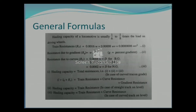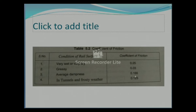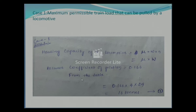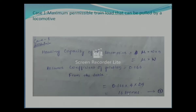The coefficient of friction is assumed to be 1/6 to 1/8 of the load on the driving wheel. From the table, average dampness gives mu = 0.166, so I take mu = 1/6. Substituting: n = 4 pairs of driving wheels, and W = 24 tons each axle. This gives hauling capacity = 16 tons, noted as Equation 1.